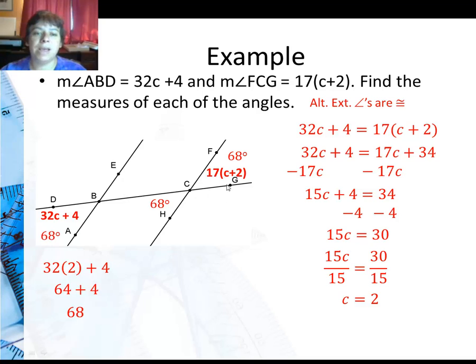Then I can use vertical angles, see there, and there, across there. Or I could use corresponding angles or alternate interior angles to find those other missing values.